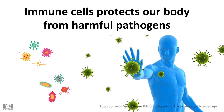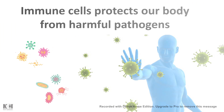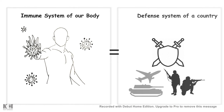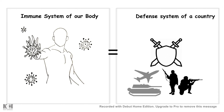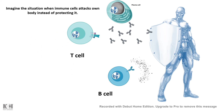The immune system of our body protects us from harmful pathogens, and that's why we can compare our immune system with the defense system of a country which protects us from all kinds of enemies. But imagine our protectors, which used to protect us from all sorts of harmful effects, turn their face against us and instead of protecting our body, they start harming it. This kind of situation happens during autoimmune disorders.